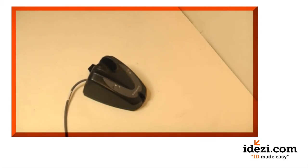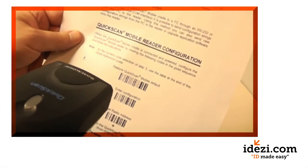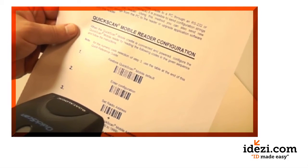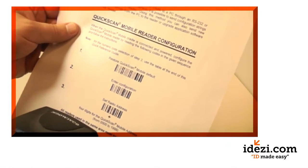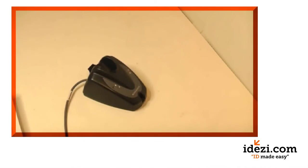On page 7 of the Quick Reference Guide, first scan the Restore QuickScan Mobile default. Then scan Enter Configuration and set Radio Address. The barcodes for the radio address can be found on page 27.